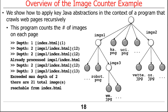Once it gets to a certain depth — in this case limited to two to prevent infinite recursion — it stops and gives you a total count of the number of images from that page. Your program assignments will do more interesting things than just count: they'll download images and ultimately display them. It'll be a lot more featureful than this and will benefit from concurrency a lot more. This is just a way to show the basic concept.